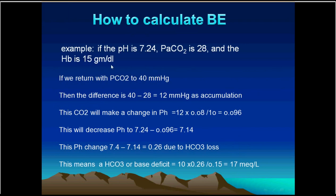How to calculate it? Usually it is written in the ABG chart, but we need to know how. If a sample has a pH of 7.24 and a partial pressure of carbon dioxide of 28, with hemoglobin of 15 g%, we restore the partial pressure of carbon dioxide from 28 back to normal, which is 40 — a difference of 12. There is a golden rule: a 10 mmHg change in partial pressure of carbon dioxide produces a 0.08 change in pH. So this restoration — accumulating CO2 — will cause a drop in pH. This 12 mmHg increase will make about a 0.1 drop in pH.